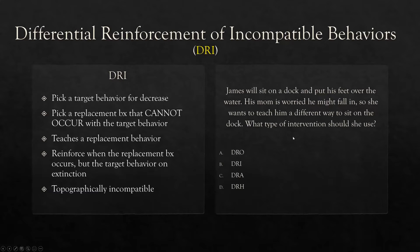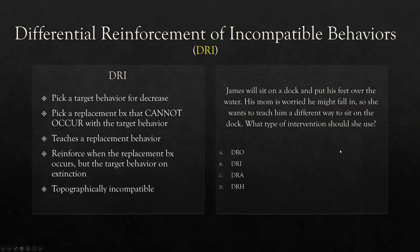James will sit on a dock and put his feet over the water. His mom is worried he might fall in, so she wants to teach him a different way to sit on the dock. What type of intervention should she use? James is sitting on a dock with his feet over the water — it's a safety issue. If we're going to teach a new behavior, do we want it to be compatible with sitting on the dock with his feet over the water? No, because it's going to become a safety issue. She wants it to be topographically incompatible with putting his feet over the water.